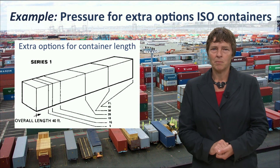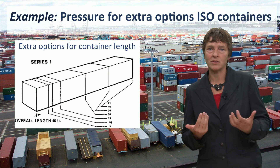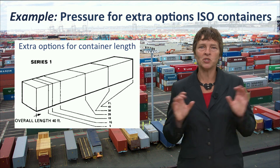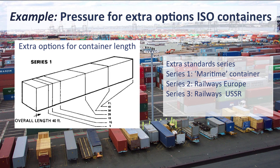Concerning the container, perhaps interesting to know, in the second draft of the container standard, extra lengths were added — see the picture. Next to extra options within one standard, also extra standards can be developed. This option was initially considered by the ISO Committee for Container Standardization. Apart from the Series 1 — the maritime container I have been talking about — a Series 2 and 3 standard was discussed. These were standards that would better match the status quo of the railways in Europe and in the USSR respectively.